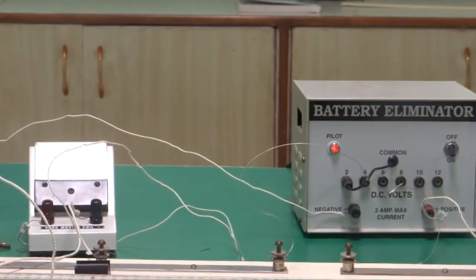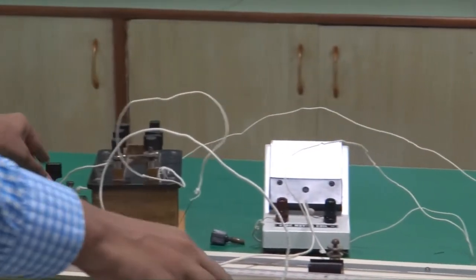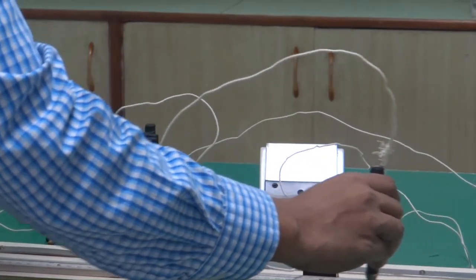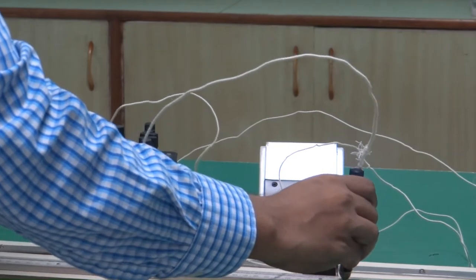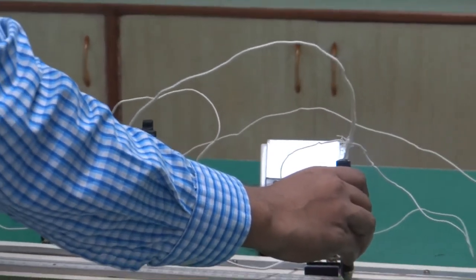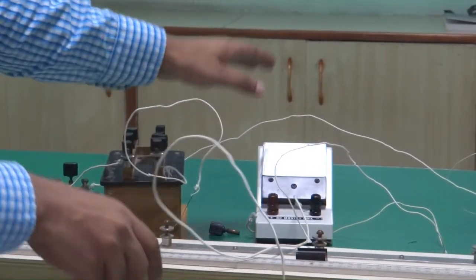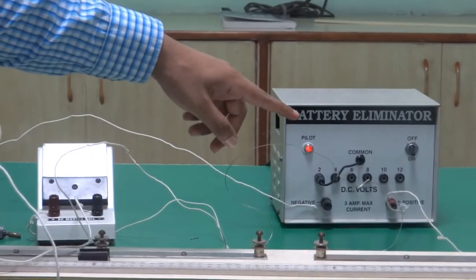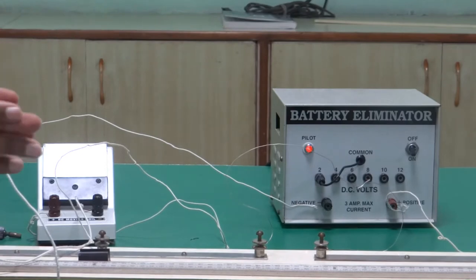Now switch on the key, take the jockey and calculate where is the null point. Right now it is coming at 52. Take two or three sets of readings. This will give you the value of the combination when x1 and x2 are in series.